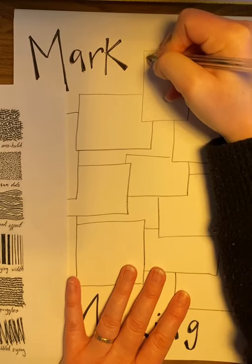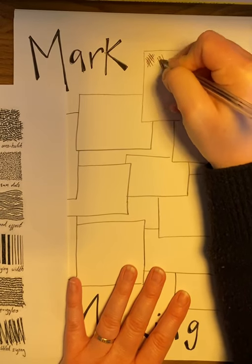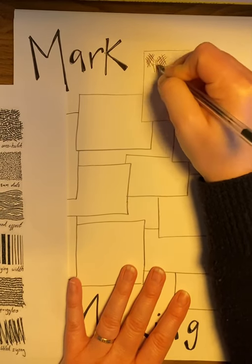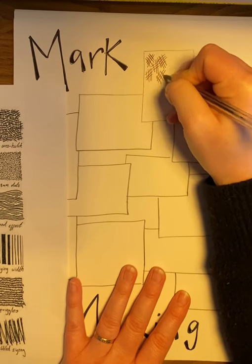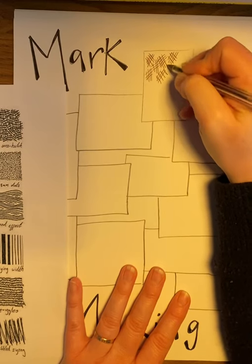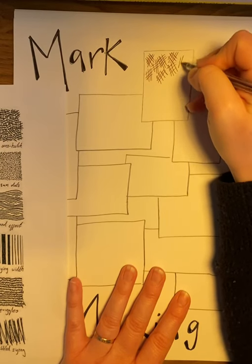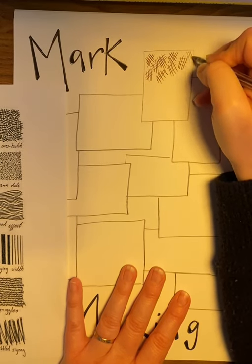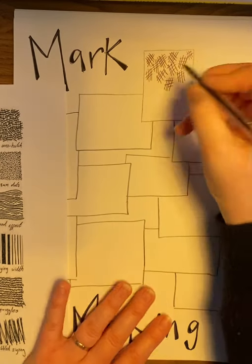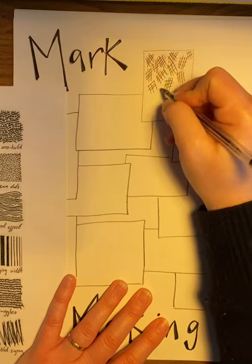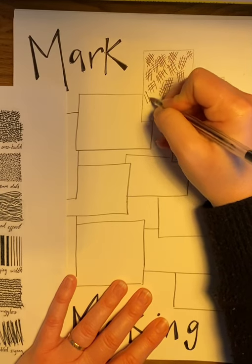So for example here I'm going to do cross-hatch. So in here I'm then going to fill my box with confident cross-hatching lines. Okay, like so, just filling the box with these.